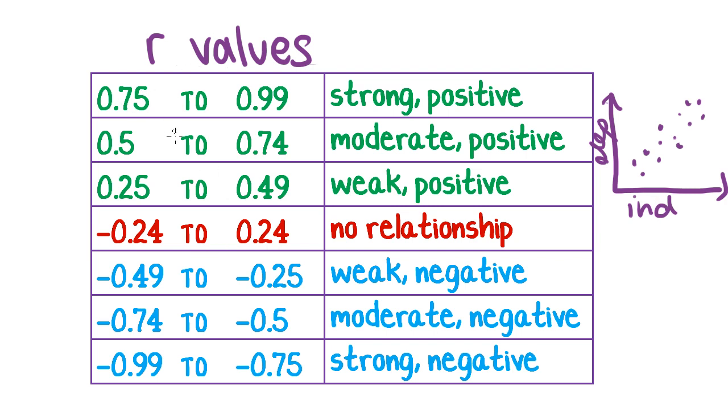And if the r value fell somewhere in this scale, it always has to be between negative 1 and positive 1. So if we got something 0.75 to 0.99, we called that a strong relationship in the positive direction.